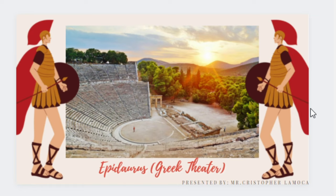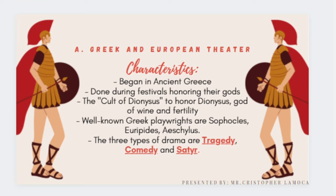The characteristics of Greek and European theater: it began in ancient Greece and was performed during festivals honoring their gods. One of the most famous plays during that time was the Cult of Dionysus. Dionysus is the god of wine and fertility. Their plays were inspired by their culture, and events like baptisms or harvests were among the themes of their plays and operas.